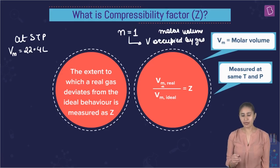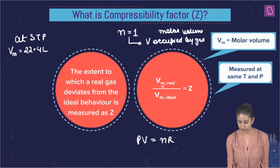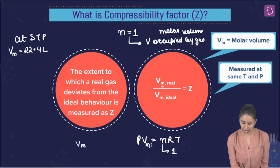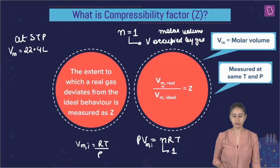We are writing Z is equal to the molar volume of the real gas divided by molar volume of the ideal gas. Also, do you remember PV equals NRT? If I am keeping N equal to 1 and we are talking about ideal gas, this becomes V molar ideal. We get V molar ideal is equal to RT by P. Why don't we substitute?